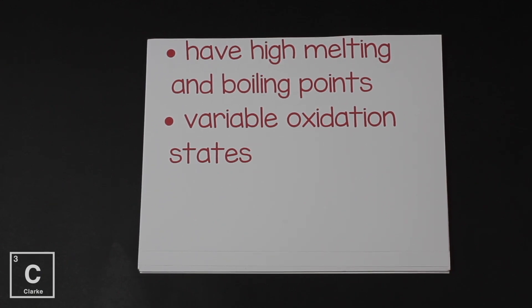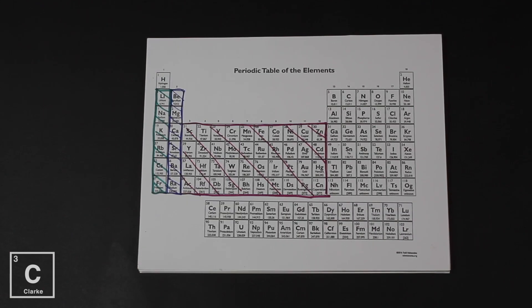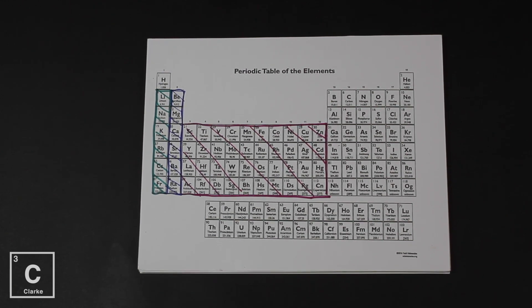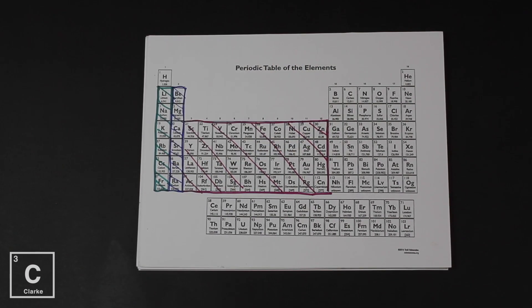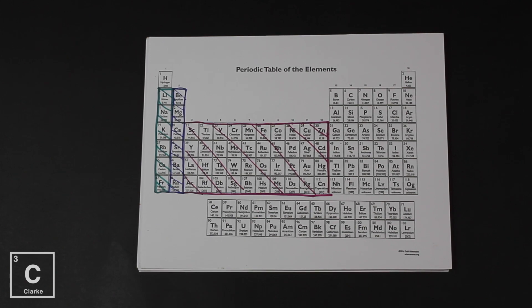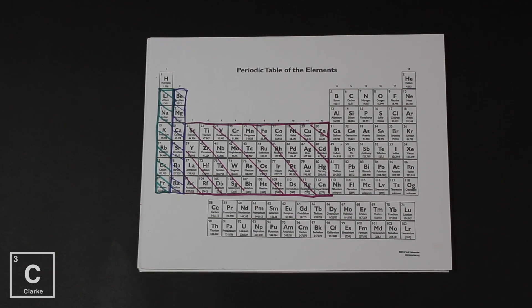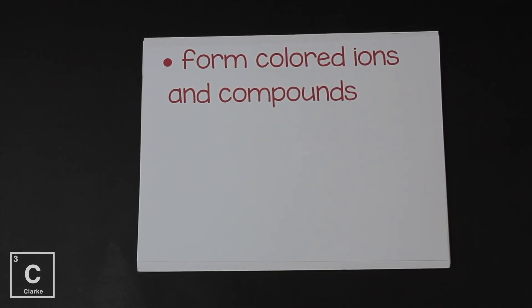Variable oxidation state is the whole reason they're called transition metals. When we talked about valence electrons, we only discussed the main groups. We didn't include transition metals because they don't follow a trend for valence electrons - they have a variable oxidative state and transition between oxidation states. They also form colored ions and compounds. If you see a pretty colored solution in chemistry class, it's probably got a transition metal in it.